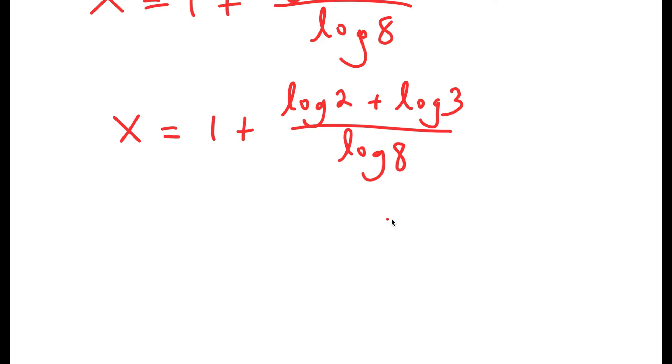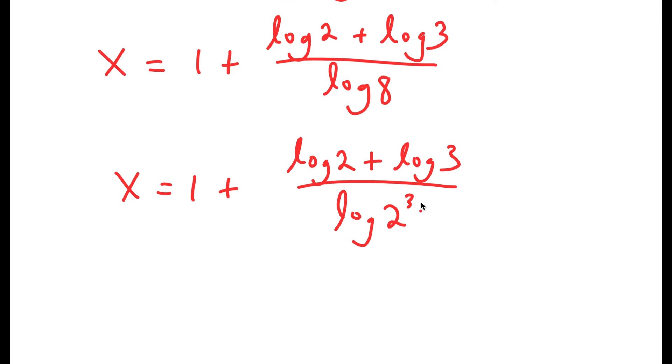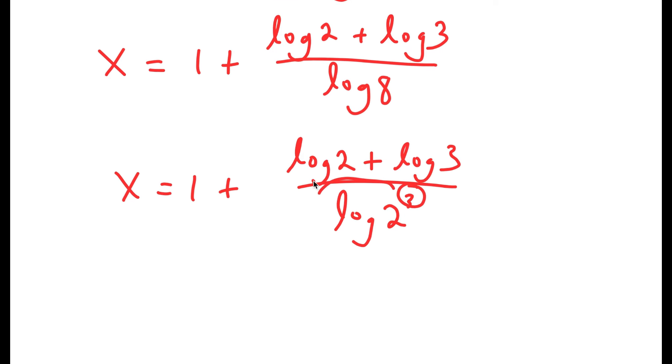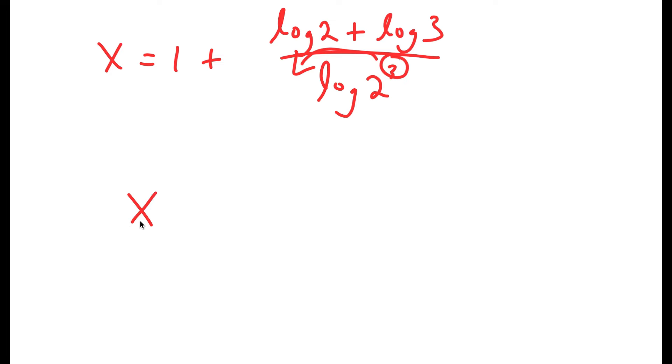Now log 8, I'm going to change this to log of 2 to the power of 3. So I simply rewrite 8 as 2 to the power of 3. And now, remember the first property, using that I can move the 3 to the front. So now I get x is equal to 1 plus log 2 plus log 3 over 3 times log 2.